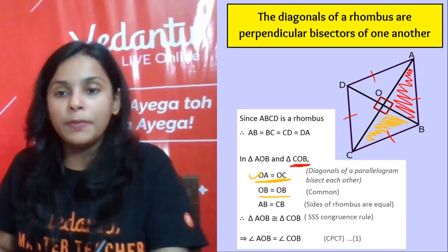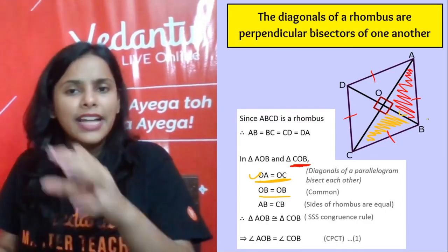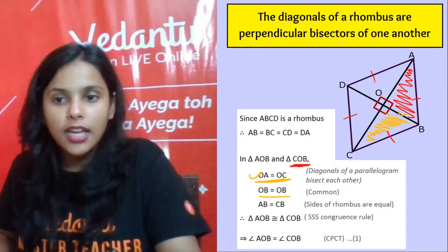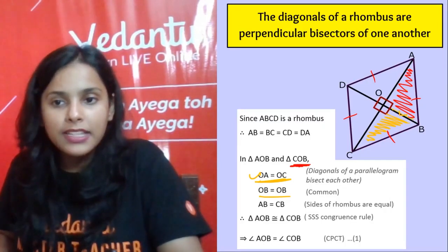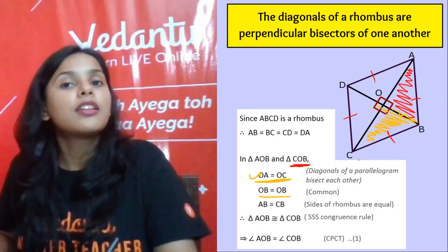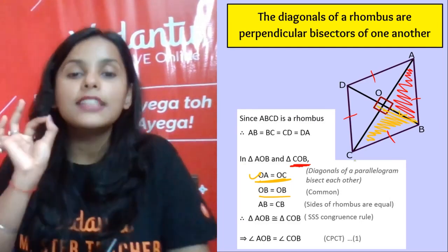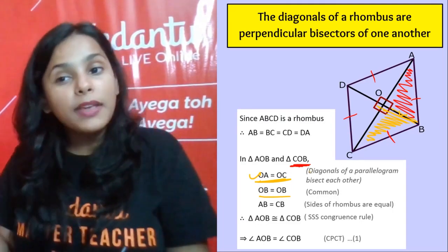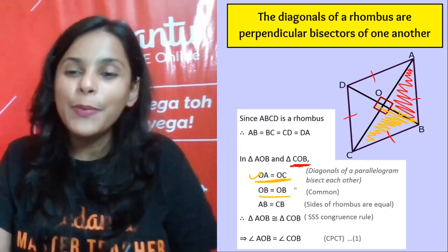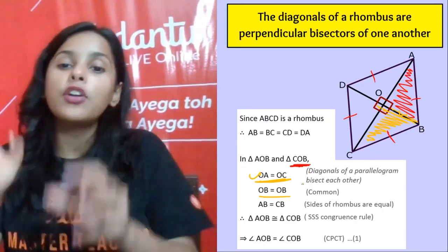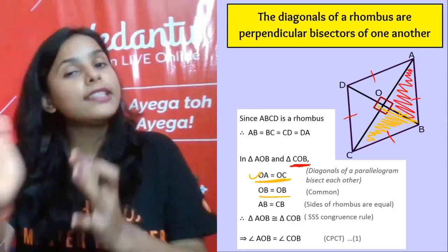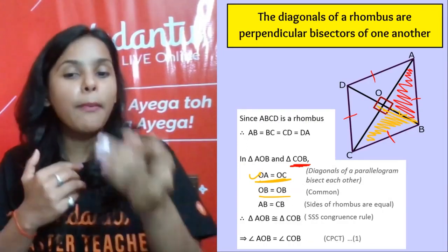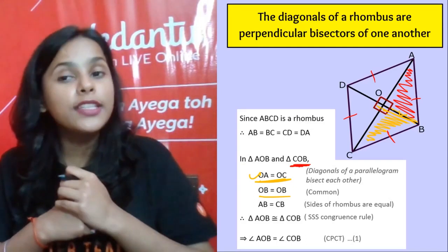OB is equal to OB because it is the same side — it is being shared by both the triangles. OB is common here. Now, AB is equal to CB. Why? Because the sides of the rhombus are equal to each other. Therefore, triangle AOB and triangle COB are congruent to each other by the SSS congruency rule.